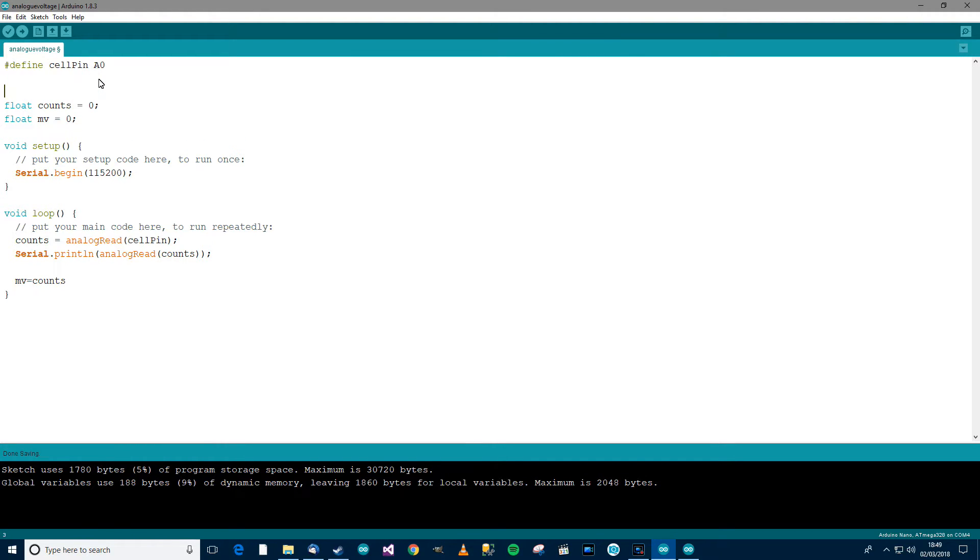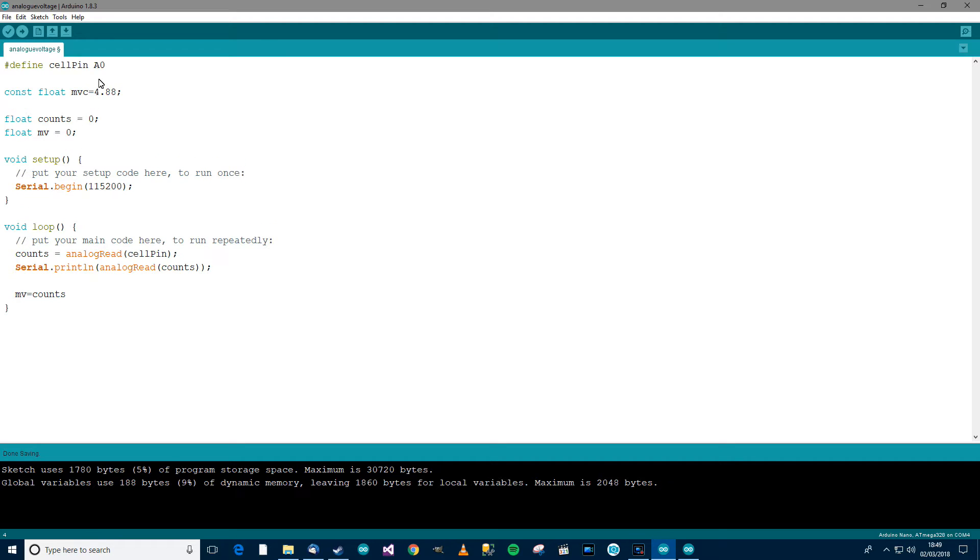So I'll just close that off there and we'll have another variable here. Let's say const float, I don't know, what can we say, millivolts per count, millivolt count, something like that. That equals 4.88, because there are 4.88 millivolts per count which this thing returns. So if we go back over here, millivolts equals count multiplied by the amount of millivolts per count. That's pretty easy. Control T, control S.